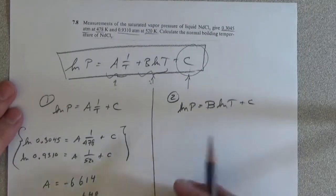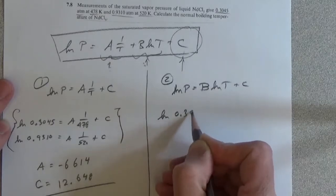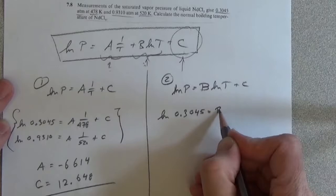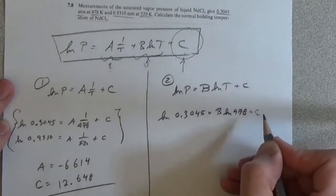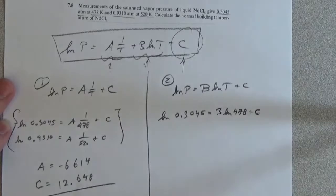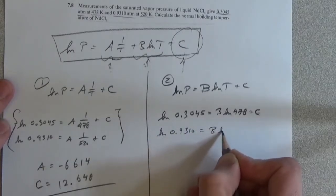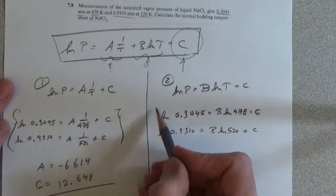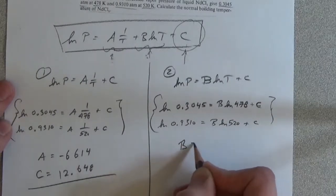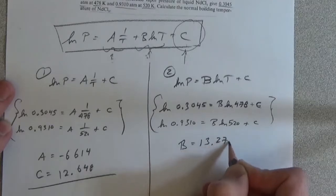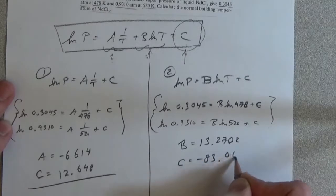For the second approach, natural log of 0.3045 equals B·natural log(478) plus C, and natural log of 0.9310 equals B·natural log(520) plus C. Solving these together gives B equal to 13.2702 and C equal to minus 83.0604.